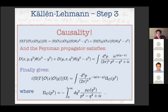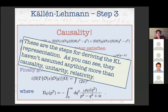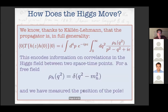Finally, we write the time-ordered two-point function as the Fourier transform of a function of the four-momentum squared, where that function is essentially the Feynman propagator integrated over a weighting function rho, which is a function of the mass squared of the inserted states. This rho is positive definite. These are the steps that implicitly we all know, but I wanted to highlight where the different pieces of causality, unitarity, and relativity come in.